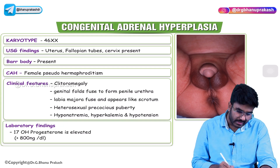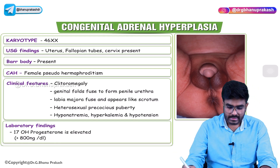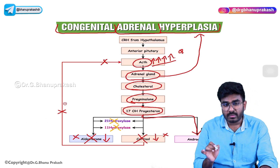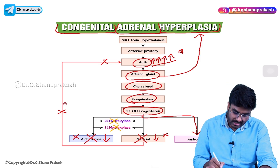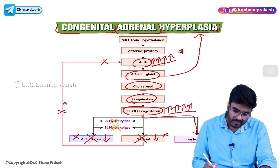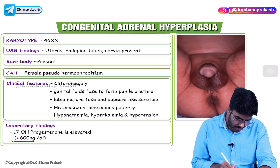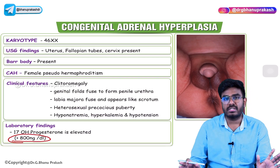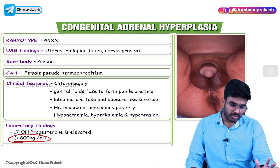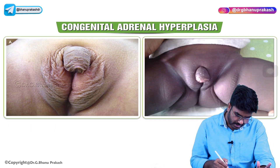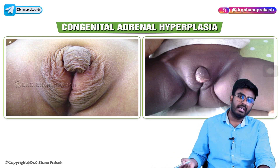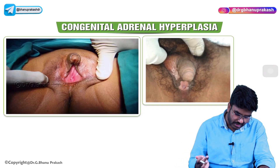Regarding laboratory findings, one of the most important is that in congenital adrenal hyperplasia, there is excessive ACTH. Due to this excessive ACTH stimulation, lots of cholesterol is converted into pregnenolone and then 17-hydroxyprogesterone. So in the blood you will see elevated levels of 17-hydroxyprogesterone — more than 800 nanograms per deciliter is diagnostic. Whenever you see 17-hydroxyprogesterone levels more than 800 nanograms per deciliter, confirm this is congenital adrenal hyperplasia. These images also show clitoromegaly with labial fusion seen in a female child with congenital adrenal hyperplasia.